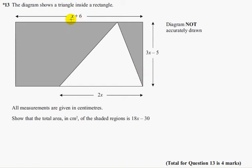Don't let the algebra confuse you. If they were numbers, how would you do it? You would find out the area of the whole rectangle by doing this times this, then take away the area of this triangle, which is base times height divided by 2.